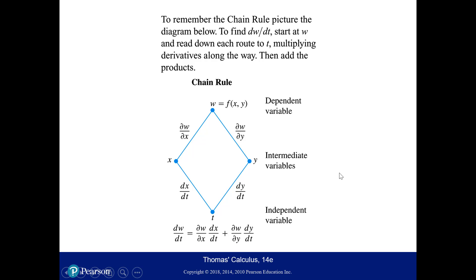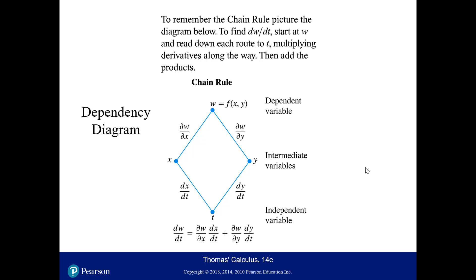For this chain rule, we have a dependency diagram. Starting with the composite function w as the dependent variable, it depends on x and y — the intermediate variables — which ultimately depend on t, the independent variable. Starting from the top, take the partial derivative of w with respect to x, and separately with respect to y, then continue down and take the ordinary derivative of x with respect to t and the ordinary derivative of y with respect to t, and add those two products together. This is called a dependency diagram.